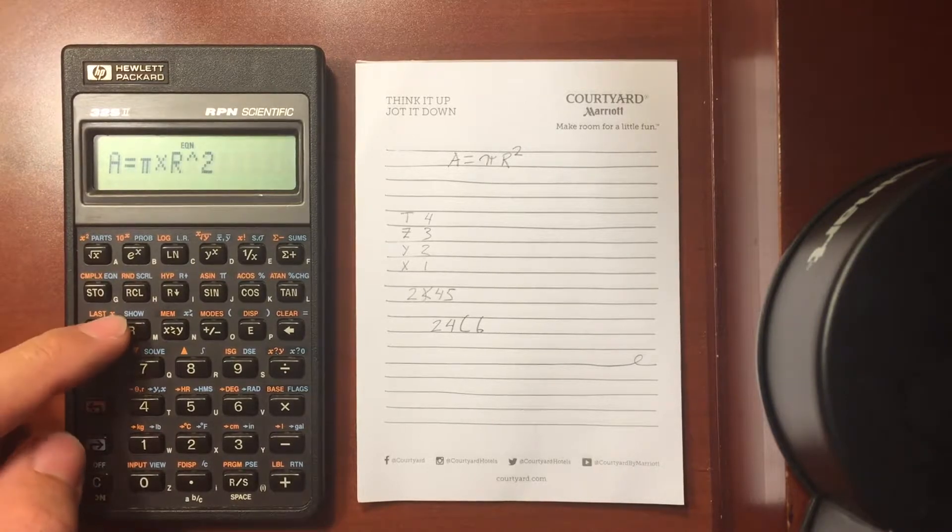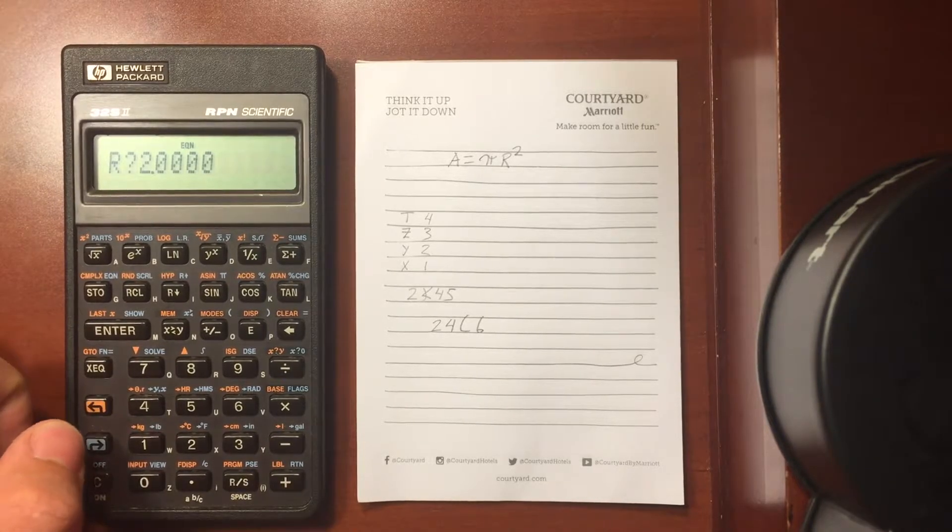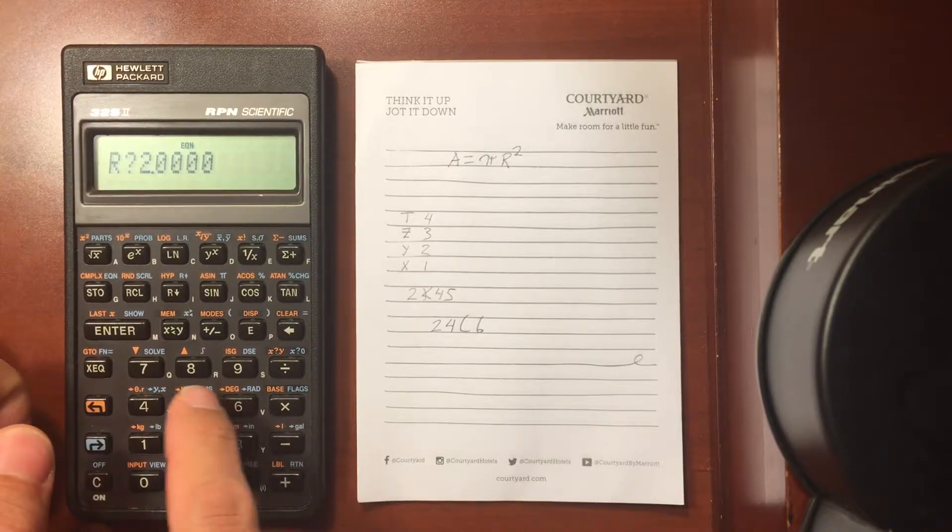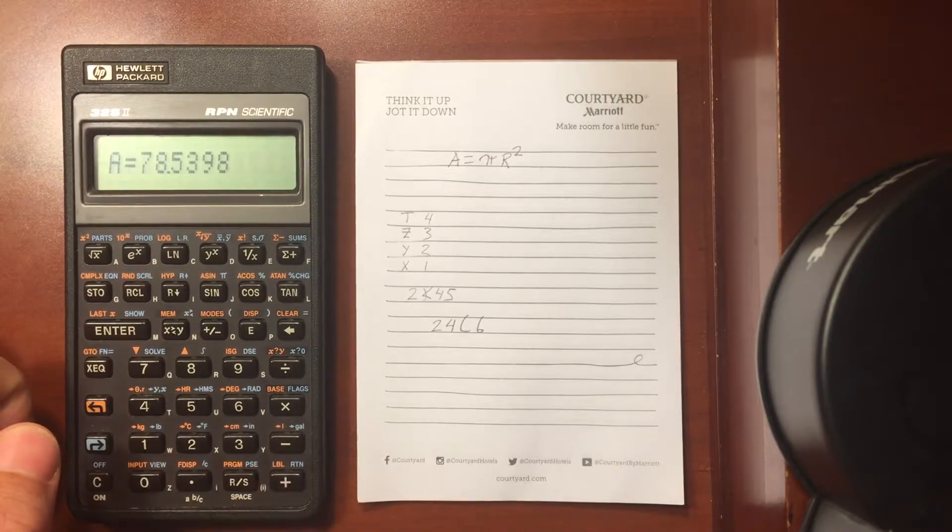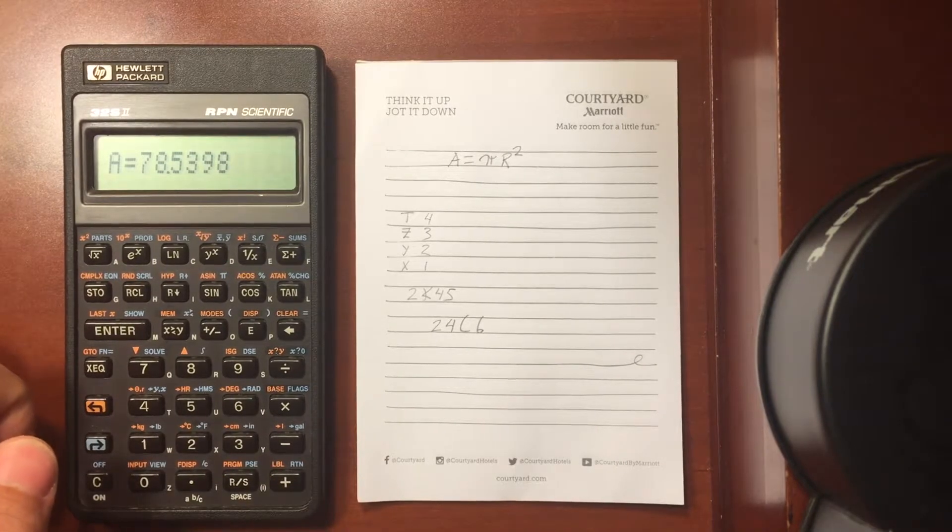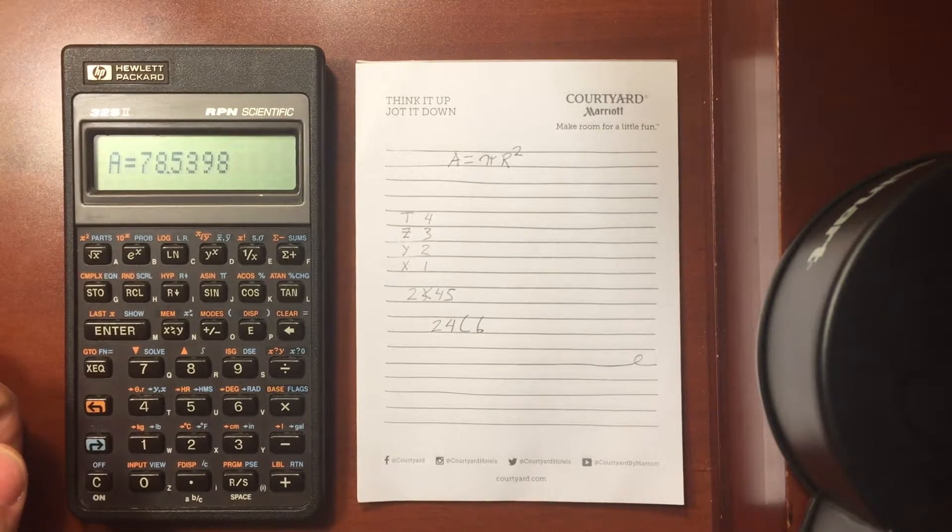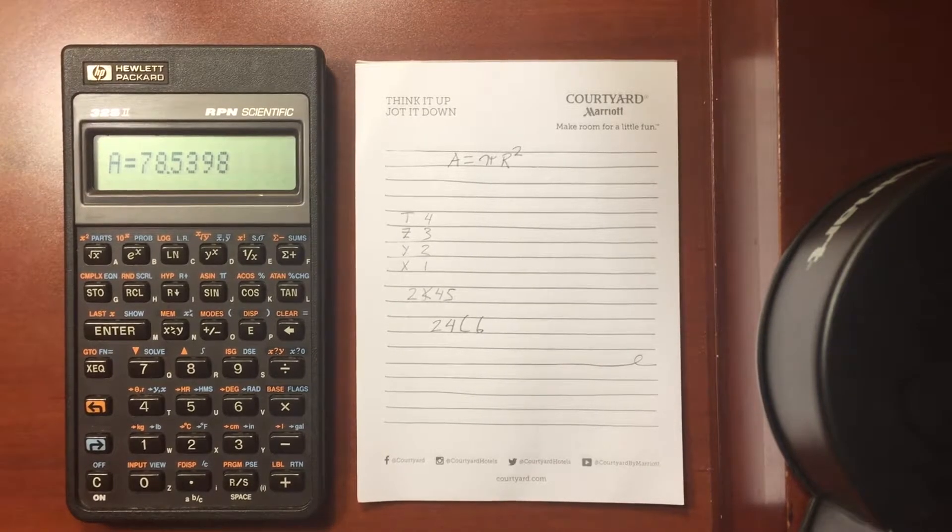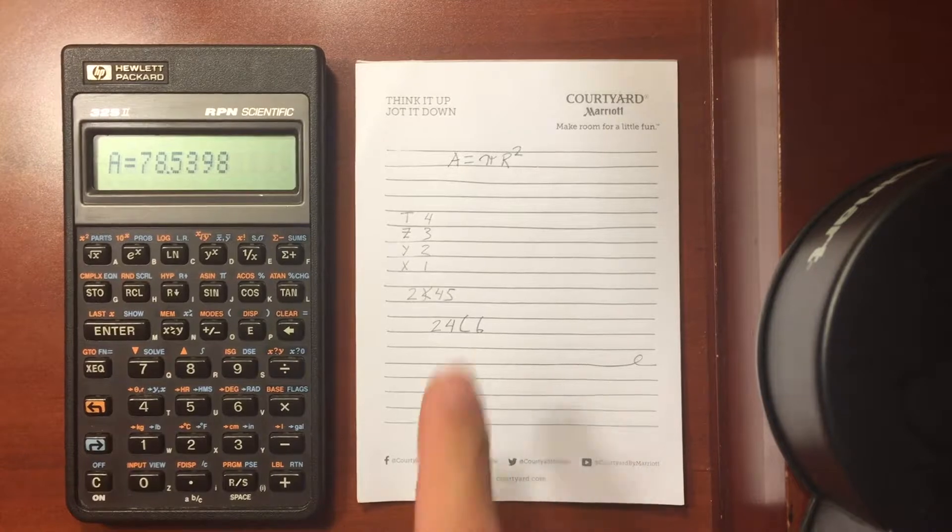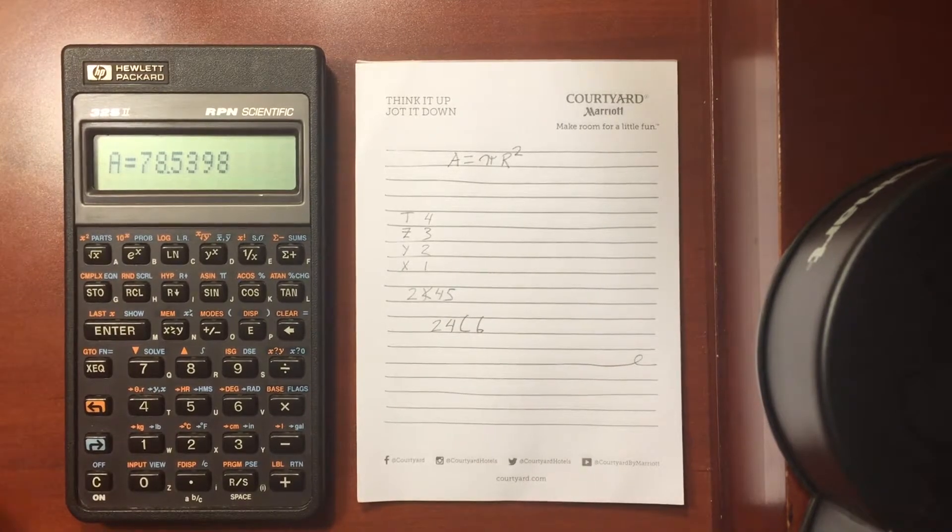Now I can go back to that equation, hit enter. What number do I want to evaluate this time for the radius? How about 5? Hit run stop. That gives me my new radius. So it's very easy to do multiple calculations, especially if you have an equation that is more complicated than this.